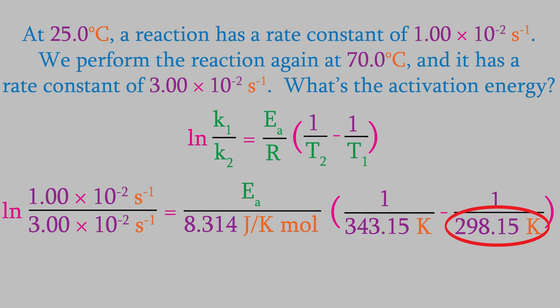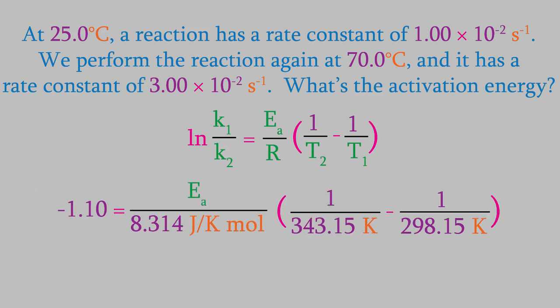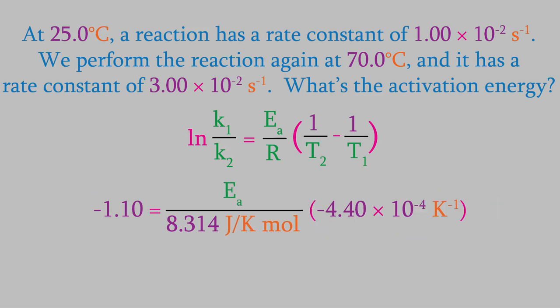When we solve the left side of the equal sign, we get negative 1.10. Next, we solve the term in parentheses, and we get negative 4.40 times 10 to the minus 4 Kelvins to the minus 1. Now we can solve the problem, and we get an activation energy of 20,800 joules per mole, so that's the activation energy for this reaction.